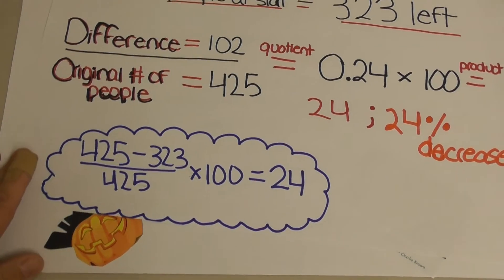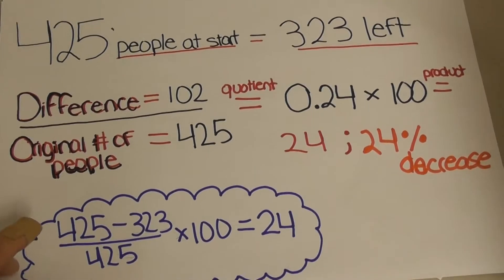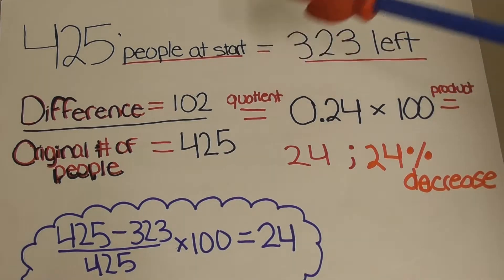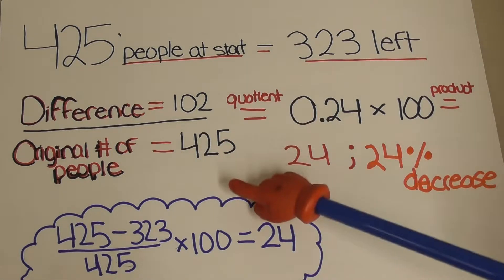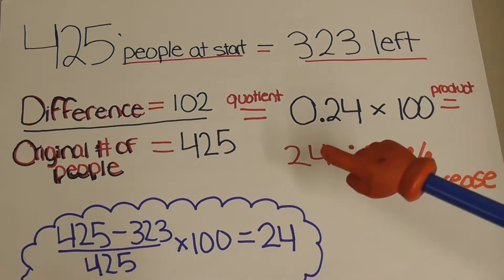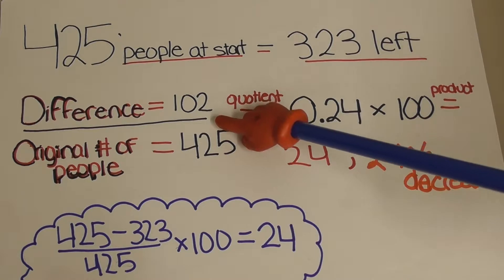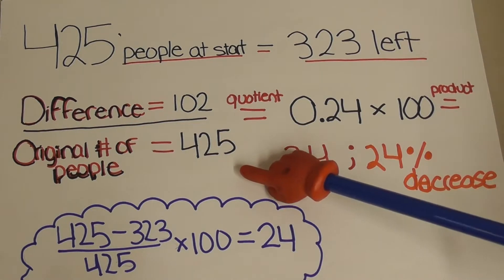First, you have to find the difference between the people who were at the cinema when the movie first started and how many people were at the cinema when the movie ended. 425 minus 323 gives you a difference of 102 people, which is how many people left throughout the duration of the movie.